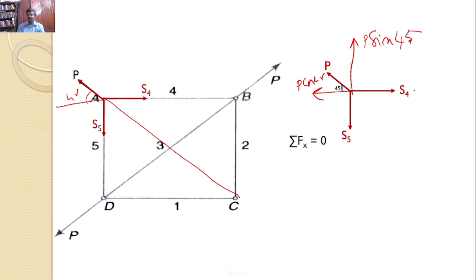And sigma fx equals 0. You can find S4 equals P cos 45 or S4 equals P by root 2. Similarly, by considering sigma fy equals 0, you can say S5 equals P by root 2.